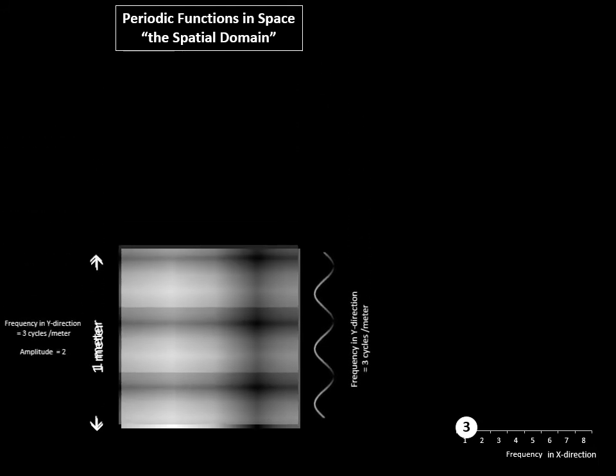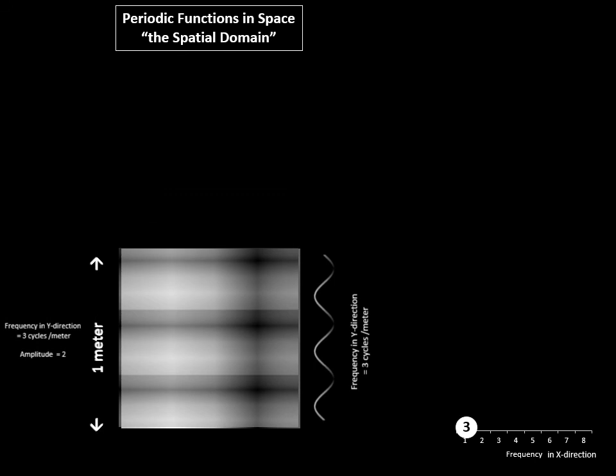If we put these two things together, we would get an image like that. But we could decompose that and represent it as a frequency in the x direction, as already shown, of one with amplitude three.